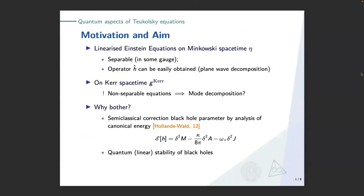Every time you want to compute the expectation value of an observable, you need this mode decomposition — numerically, you need this mode decomposition. For example, imagine that you want to compute the semiclassical correction of the black hole parameters by looking at something called canonical energy, which classically is related to corrections to the mass, area, and angular momentum of the black hole. If you want to compute the expectation value of this object, you need to perform the standard mode decomposition and so on and so forth.